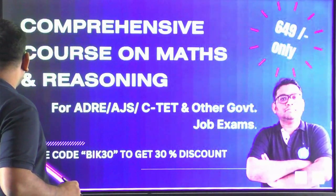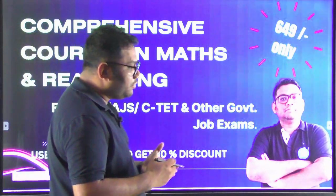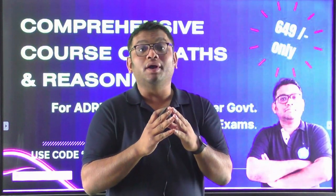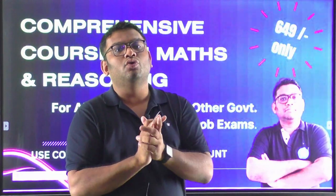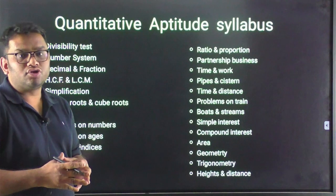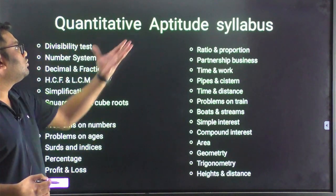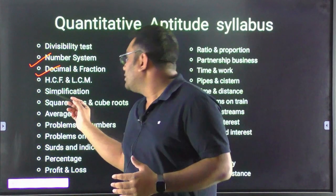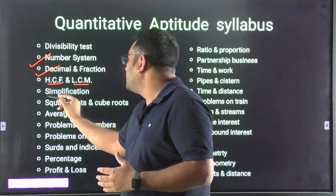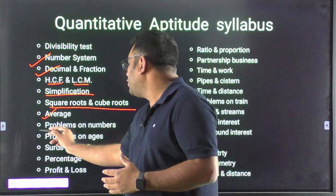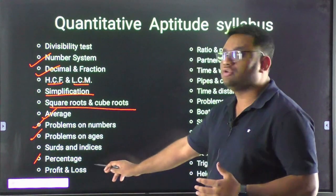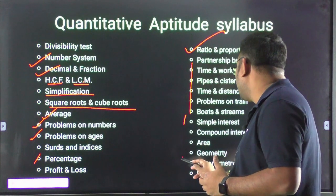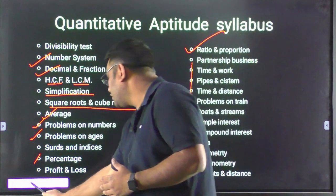Here is our announcement: our family has ADRI judicial services, and even if you are doing APSC, the math and reasoning portion — quantitative aptitude — this is a complete comprehensive course. We have discussed quantitative aptitude including number system, decimal and fraction, HCF and LCM, simplification, square root, cube root, average, percentage, profit and loss, ratio and proportion, time and distance, time and work, boats and streams, and height and distance.